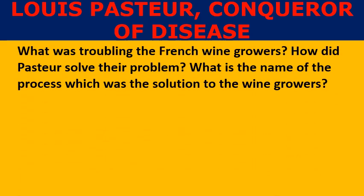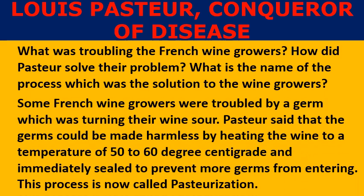What was troubling the French wine growers? How did Pasteur solve their problem, and what is the name of the process? Some French wine growers were troubled by a germ which was turning their wine sour. Pasteur said the germs could be made harmless by heating the wine to a temperature of 50 to 60 degrees centigrade and immediately sealing it to prevent more germs from entering. This process is now called pasteurization.